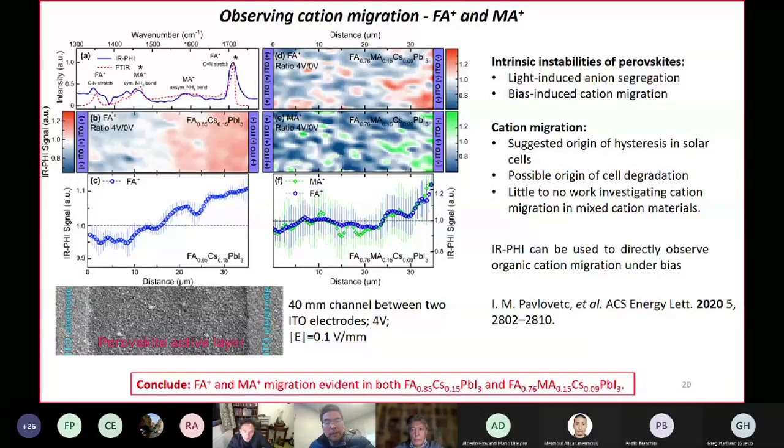This bias induced cation migration is thought to be the origin of hysteresis in perovskite solar cells and linked to its degradation as well. You can make lateral devices where I have formamidinium cesium lateral devices between two electrodes, or triple cation systems, formamidinium, methyl ammonium and cesium between two electrodes, apply a bias, and using IRPHI, which is chemically specific, look at the formamidinium ratio before and after, or the methyl ammonium ratio before and after. Through the line scans shown here, you can see that there's a pileup on the side closest to the negative electrode and a depletion on the side closest to the positive electrode. We haven't done these in a stop motion manner, but in principle, you could do that to actually get things like the migration activation energies and mobilities of these cations under bias. So we can look at instabilities of hybrid perovskites using cation-specific infrared imaging.